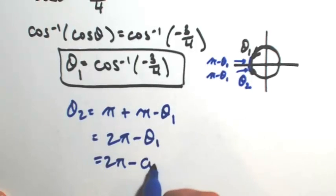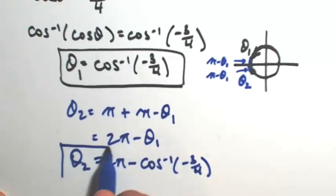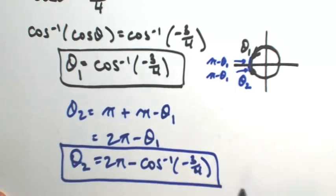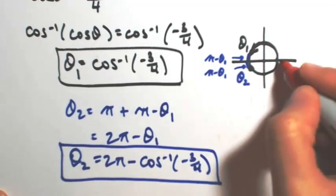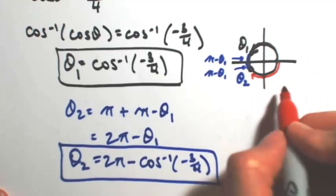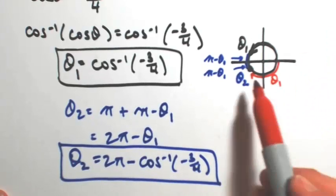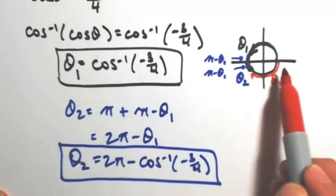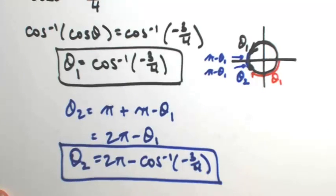And then θ₁ with the inverse cosine. Okay, that's one way to do it. Let me show you a second way that you could have looked at that. So θ₁ in the top part of that could also be viewed in the bottom part. This is also θ₁. It's negative θ₁. So if I want to find what θ₂ was, I could have done 2π minus θ₁. Just a side note.